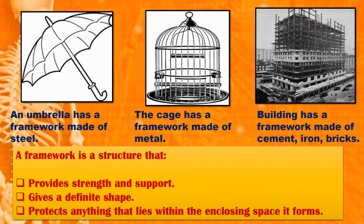A building has a framework made of cement, iron and bricks. These cement, iron and bricks give strength and support to the building — it provides proper structure to the building. Thus, a framework is a structure that provides strength and support. It gives a definite shape to the object or a thing, and it protects anything that is present inside that structure.